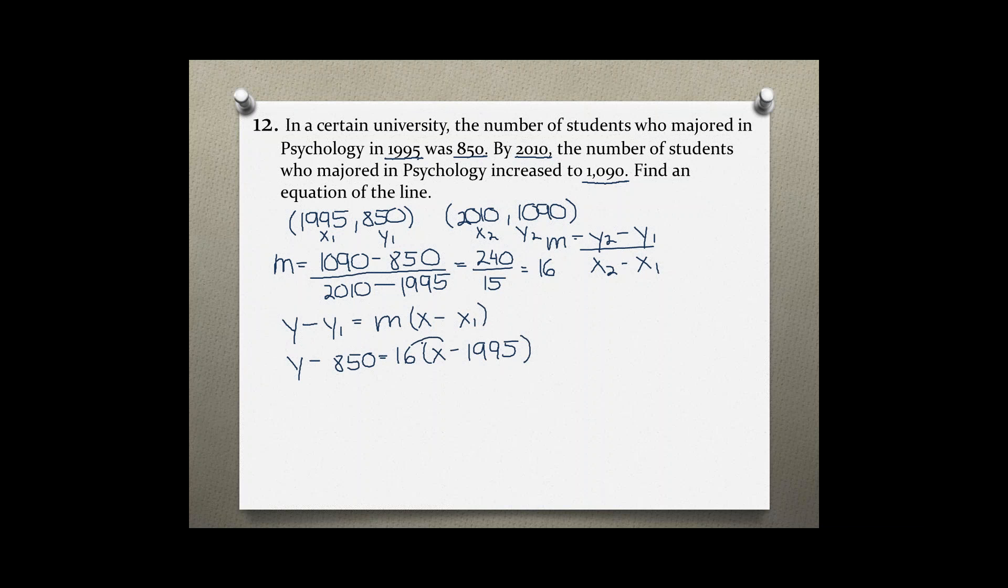Use distributive property to get rid of the parentheses. Y minus 850 equals 16x minus 31,920. Add 850 to both sides.